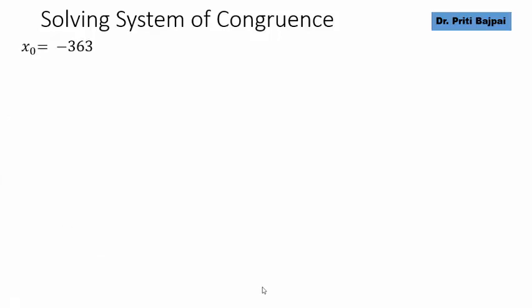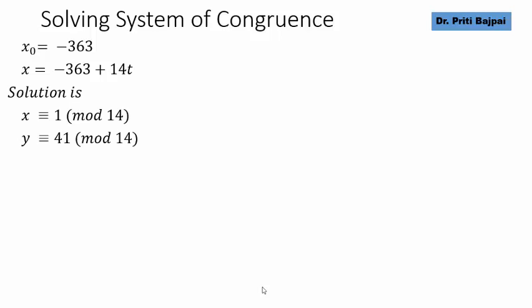This gives us x0 is minus 363 and we can write it as x is minus 363 plus 14t. The solution becomes x is congruent to 1 mod 14 and y is congruent to 41 mod 14.